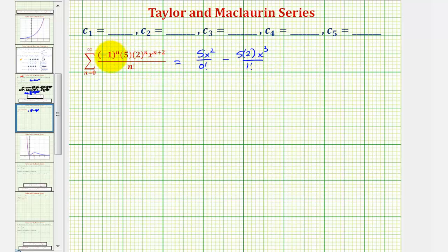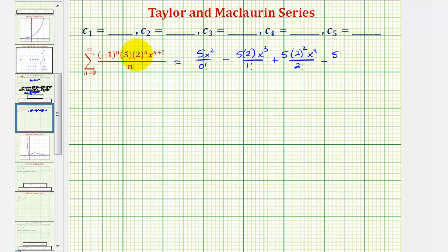When n equals 2, the term is positive, so we have plus 5 times 2² times x⁴ divided by 2 factorial. When n equals 3, the term is negative, so we have minus 5 times 2³ times x⁵ divided by 3 factorial, and so on. Notice this term is degree 5, which will give us c sub 5, so we can stop here.